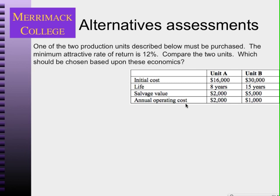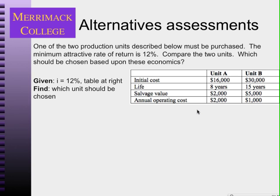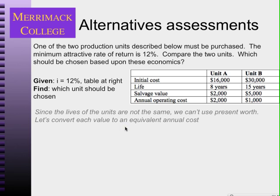Now let's look at a different problem with two alternatives that have different design lives. We have two production units. The interest rate is 12%, and we have design life, salvage value, and annual operating costs for each. We would not use net present worth, benefit cost ratio, or rate of return here. The only method that works with different design lives is the equivalent annual cost.